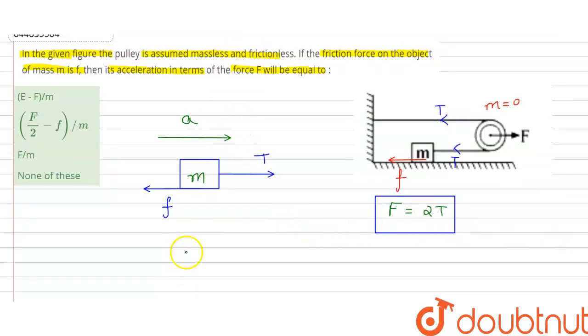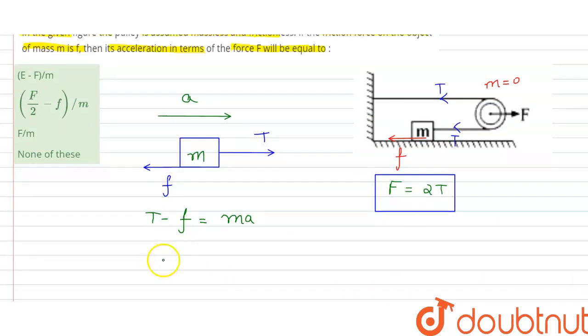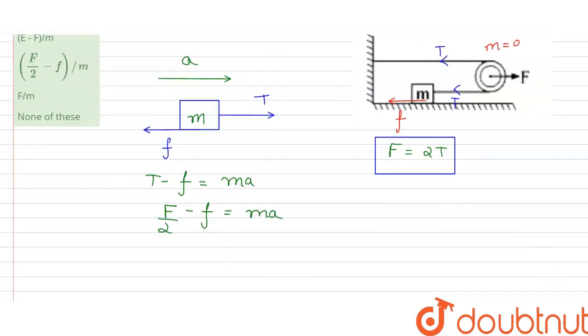So now if we write the equation, we get T minus F is equal to M A. And from here we can put the value of T which is equal to F by 2, so F by 2 minus F is equal to M into A. So from here we get our acceleration that is equal to F by 2 minus F divided by M, where this F is force and this F is friction on the block. So this is the value of our acceleration.